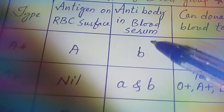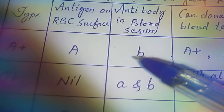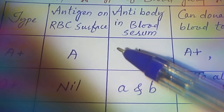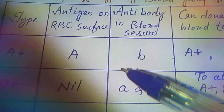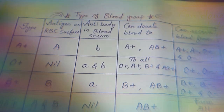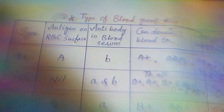One more type of antigen was discovered by Landsteiner and Wiener. The name of that antigen is antigen D, also known as the Rh factor. So blood groups are decided by three types of antigens: antigen A, antigen B, and antigen D. Antigen D decides the positive or negative classification of a blood group.